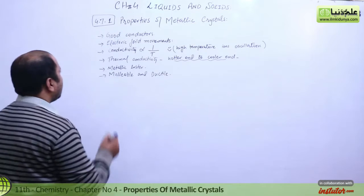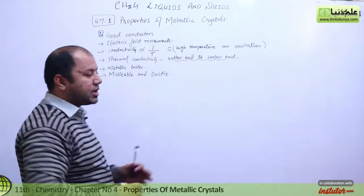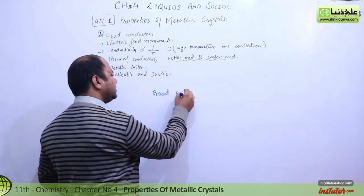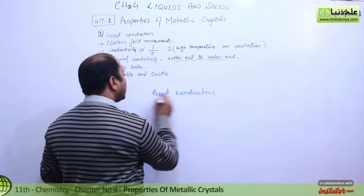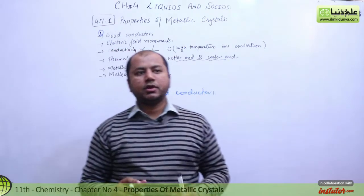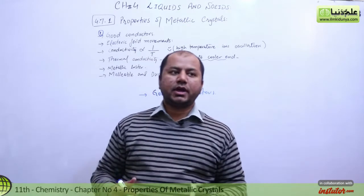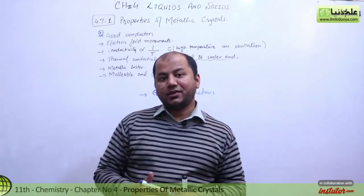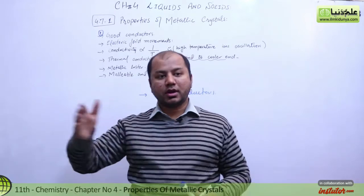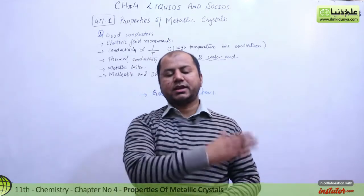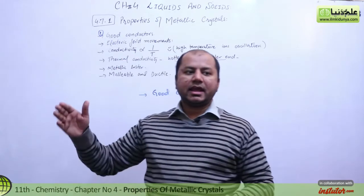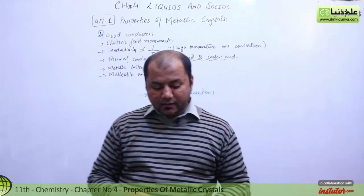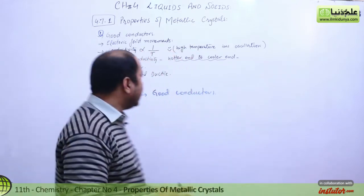Let's talk about property number one: metals are good conductors. This is because when we apply electricity or heat, they can conduct it through their metallic surface. Metals are good conductors of both electricity and heat.